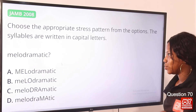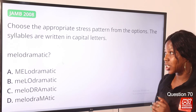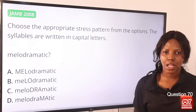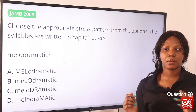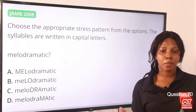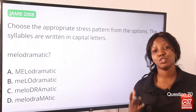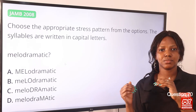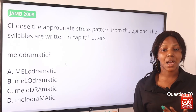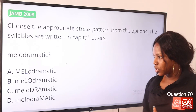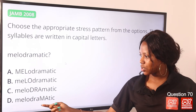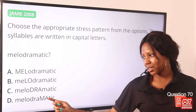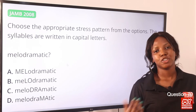Question 70. Choose the appropriate stress pattern from the options; the syllables are written in capital letters. The word is pronounced as melodramatic. The humming technique is usually effective when you know the actual pronunciation. So melodramatic — 'ma' is stressed. We can see this in option D, written in capital letters. So option D is the correct answer.